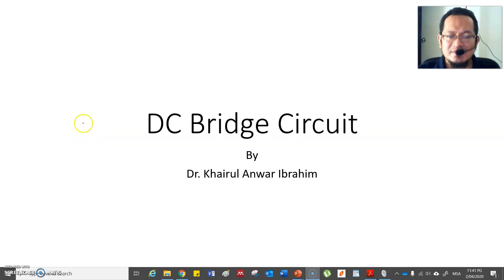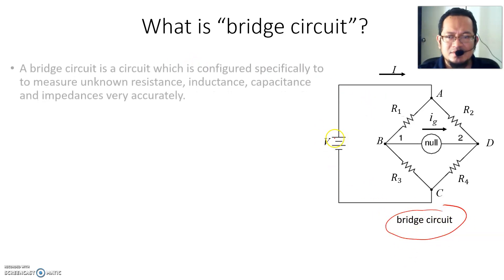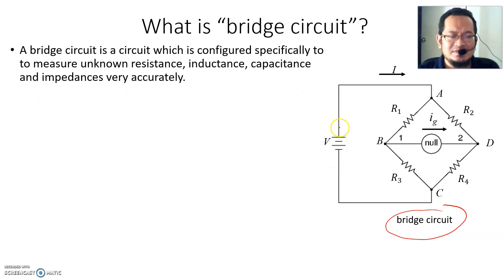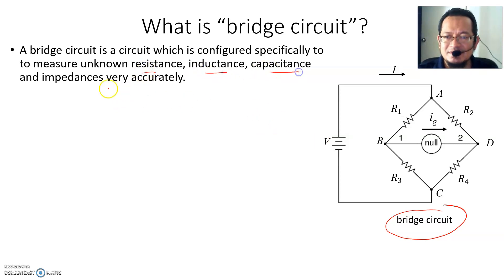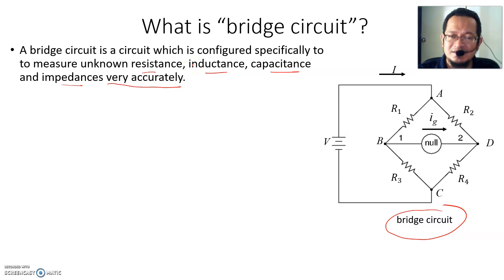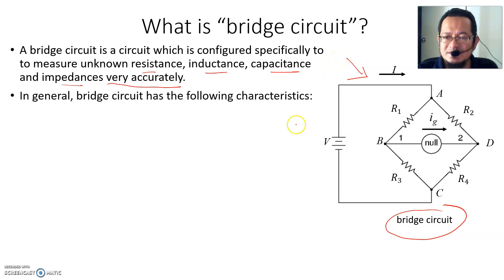What is a bridge circuit? A bridge circuit basically looks like this — it is a circuit configured with several different resistors and used for measuring resistance, inductors, capacitors, and impedances very accurately, before the advent of advanced digital multimeters. It was the most widely used equipment to measure these parameters.